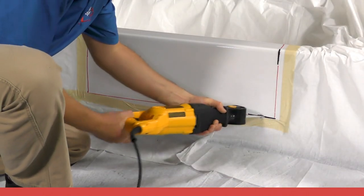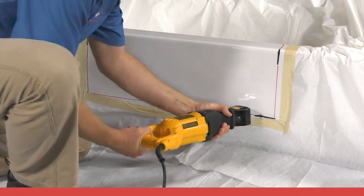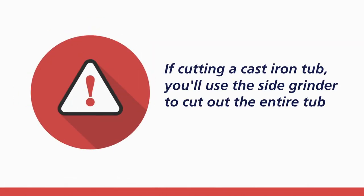The remainder of the tub is cut using the reciprocating saw. Remember, when cutting cast iron, you will continue to cut using the side grinder.